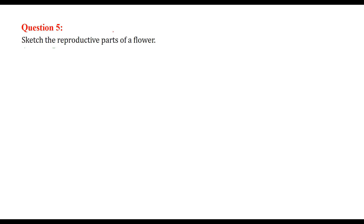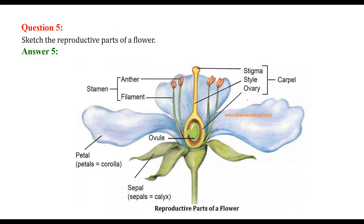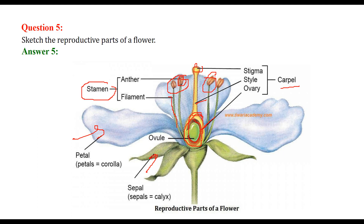Sketch of the reproductive parts of a flower: the ovule is contained within the ovary, and the ovary along with the style and stigma makes the carpel. The anther and filament together are called the stamen. Petals and sepals are also present. The pollen travels to the stigma, combines with the ovary, and then germinates.